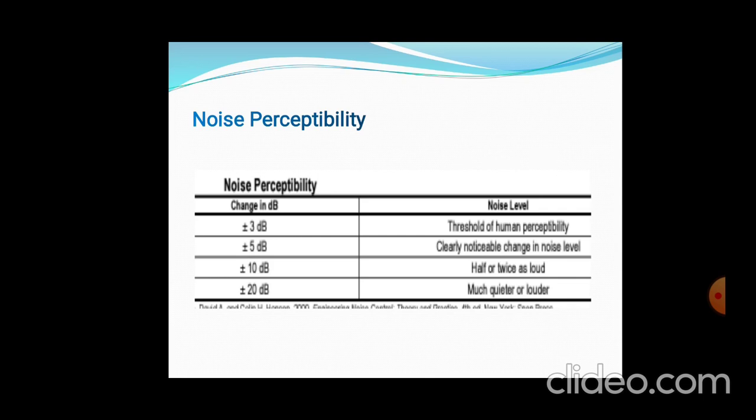Noise perceptibility: changes in decibel level with human tolerance — plus or minus 3 dB is the threshold of human perceptibility; plus or minus 5 dB is a clearly noticeable change in noise level; plus or minus 10 dB sounds half or twice as loud; plus or minus 20 dB is much greater and louder. This concludes the introduction to noise.